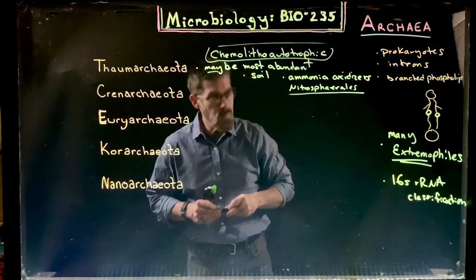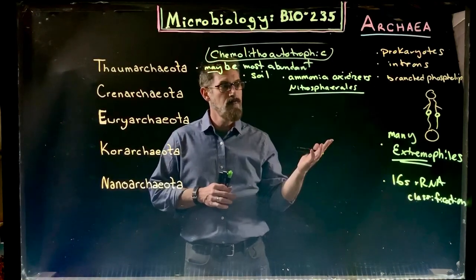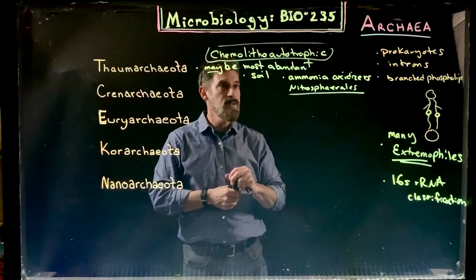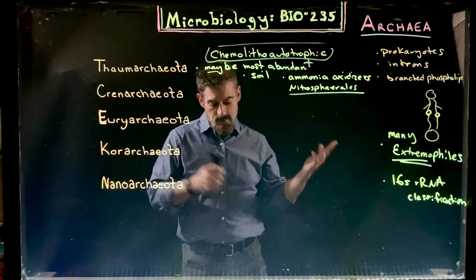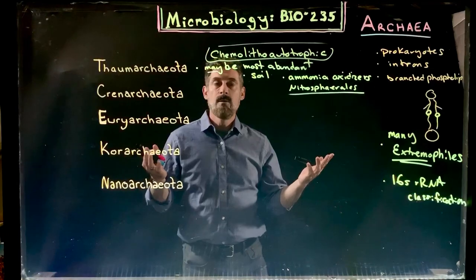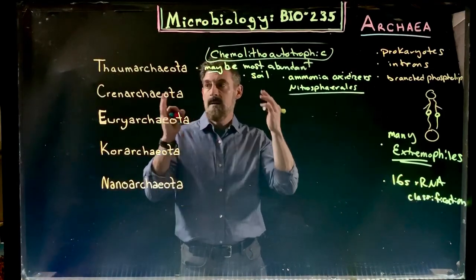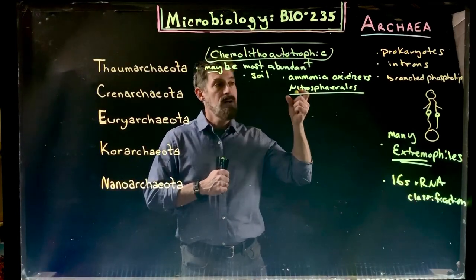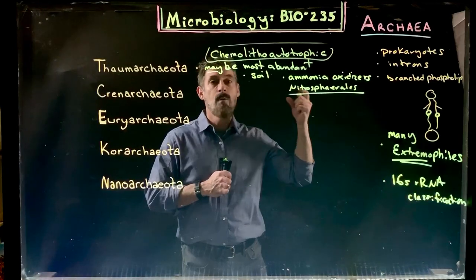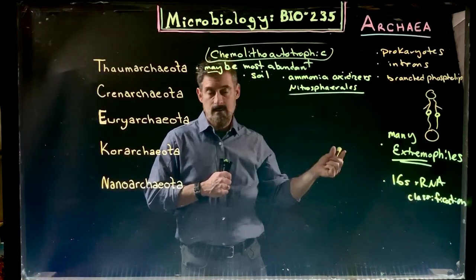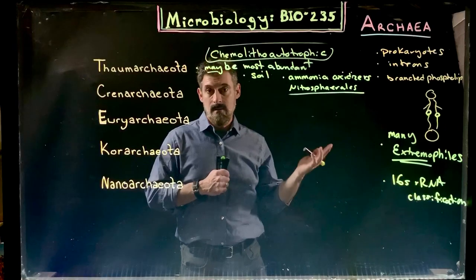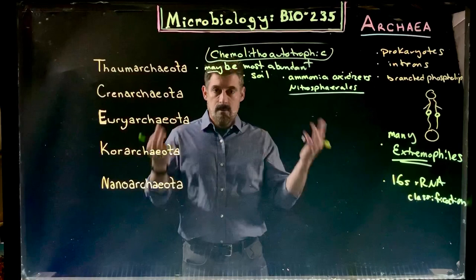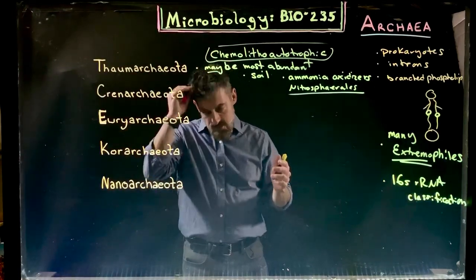Nitrosphaerales is an example of a soil archaeon in this group. These organisms are important because they are part of nitrogen cycling in soils, and they are unique in how they get their energy. Instead of using organic molecules for energy, they use ammonia — an inorganic molecule — making them very important in soil and nutrient cycling. That is the key takeaway for this abundant group of chemolithoautotrophic Archaea.